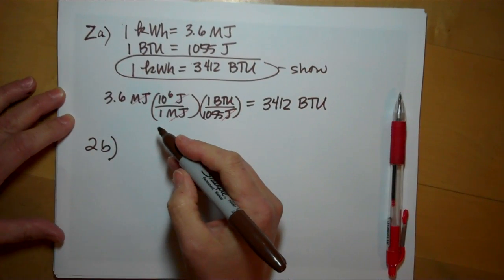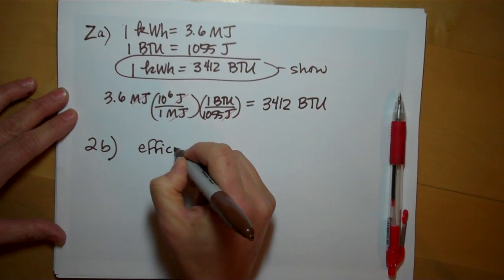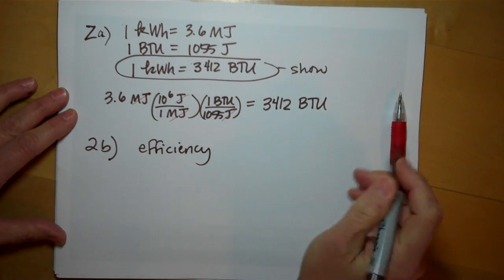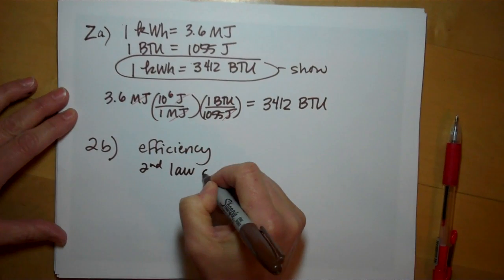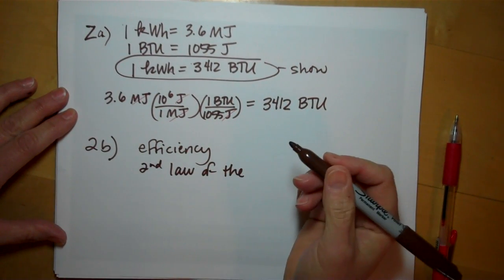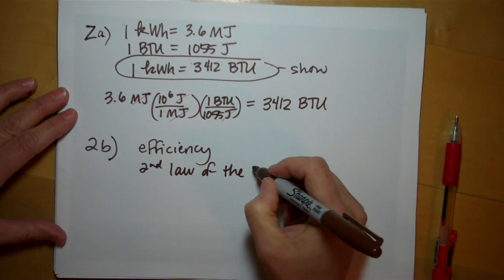It all comes down to efficiency. A power plant, nothing can be 100% efficient. It's impossible. It breaks the second law of thermodynamics that basically states 100% conversion of heat to mechanical electrical energy is impossible.